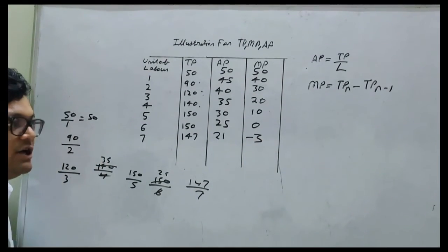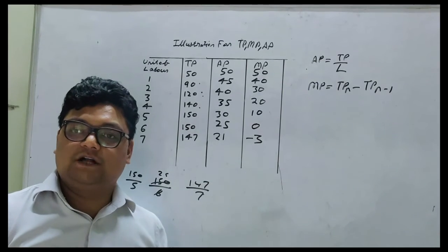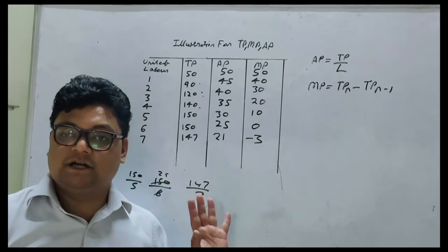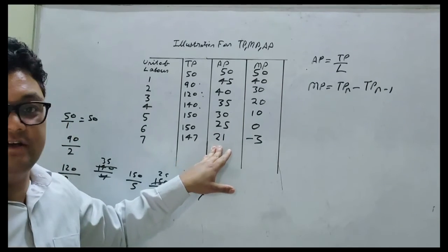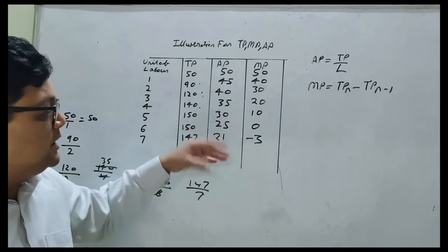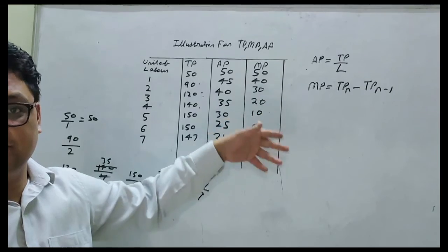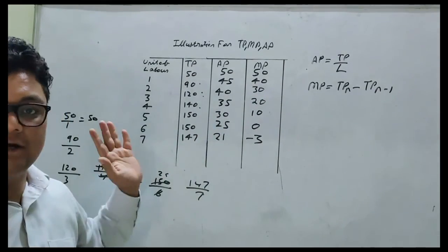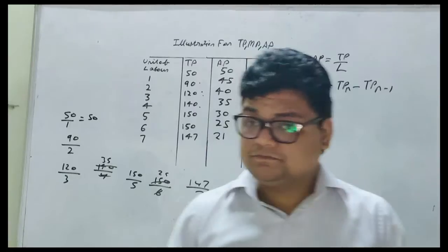Okay students, so here is an illustration of calculating total product, average product, and marginal product. For example, if total product is not given but average product is given, you have to do the opposite formula, means total product equals average product multiplied by labor. You can find total product. Okay students, in the next class I am going to discuss law of variable proportion, in which this illustration will help you.